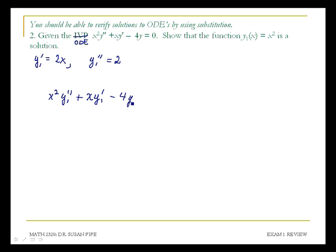minus 4y1 is equal to x squared, and then y1 double prime is 2, x squared times 2, plus x times y1 prime is 2x, minus 4 times y1, and y1 is x squared.